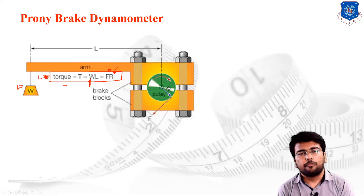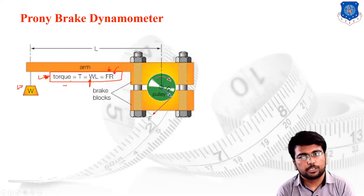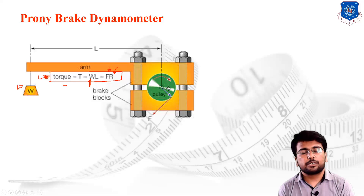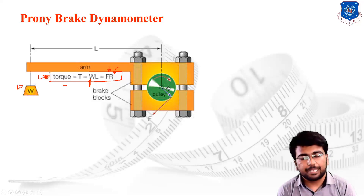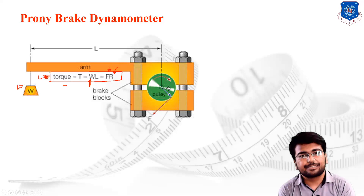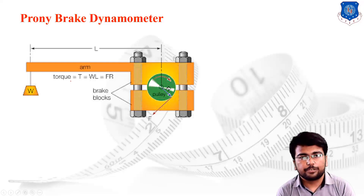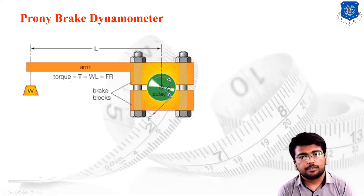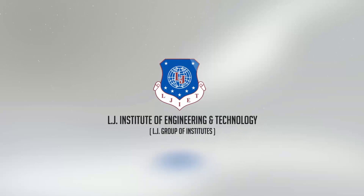To summarize today's lecture: we started with the concept of torque and shaft power, then covered the basic classification of torque measurement techniques — absorption type, transmission type, and driving type dynamometers. In the absorption type, we discussed the prony brake dynamometer in detail. In the next lecture, we will discuss the remaining absorption type dynamometers: rope brake dynamometer, hydraulic dynamometer, and eddy current dynamometer. Thank you.